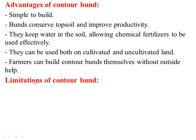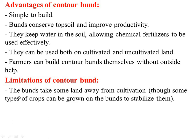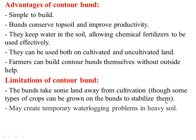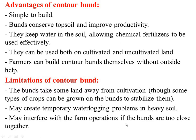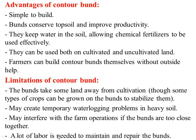The limitations of contour bunds are that the bunds take some land away from cultivation, though some types of crops can be grown on the bunds to stabilize them. They may create temporary waterlogging problems in heavy soil, may interfere with farm operations if the bunds are too close together, and a lot of labor is needed to maintain and repair the bunds.